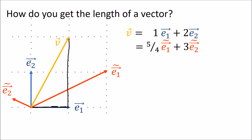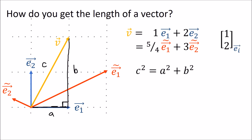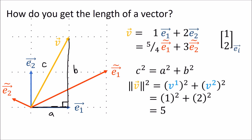If you remember your elementary school math, seeing a right-angled triangle should make you think of Pythagoras' theorem: c squared equals a squared plus b squared, where c is the longest side. So in this case, a is the side length along the e1 direction, and b is the side length along the e2 direction. Given the column vector (1, 2), this ends up being 1 squared plus 2 squared, which is 5. But that's the square of the length of v, so to get the actual length we take the square root, giving us the square root of 5, which is approximately 2.236.